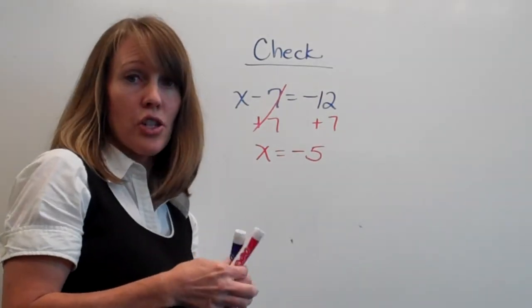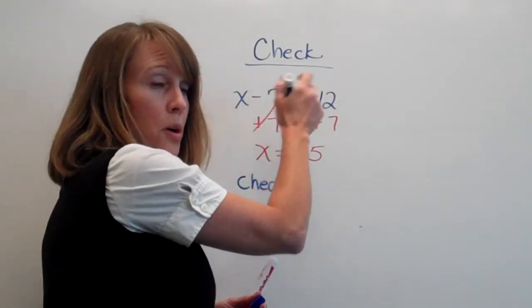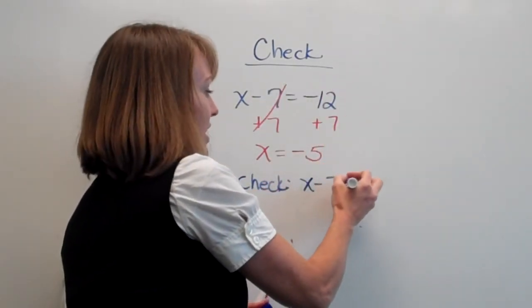Now we need to check it. So here's how we do a check. We're going to write the original problem. x minus 7 equals negative 12.